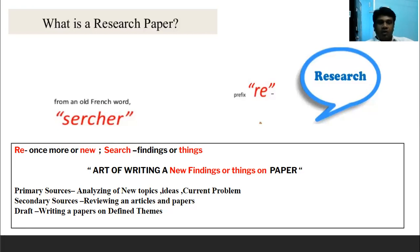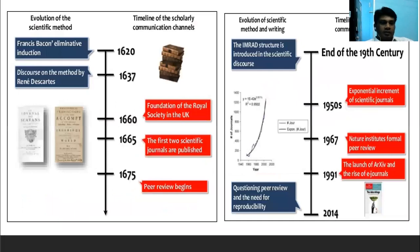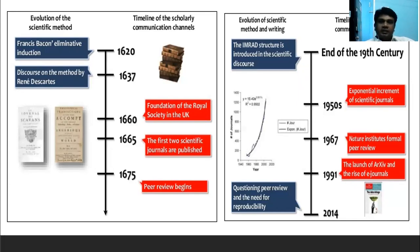Then drafting a manuscript on defined themes. This is the evolution of the scientific method. It started in the 16th century with Francis Bacon and the elimination induction method. The Royal Society was founded in the UK in 1660. The first two scientific journals were published in 1665, and peer review began in 1675. At the end of the 19th century, image structure was introduced. Nature's formal peer review began in 1967, e-journals launched in 1991, and discussions on reproducibility started in 2014.